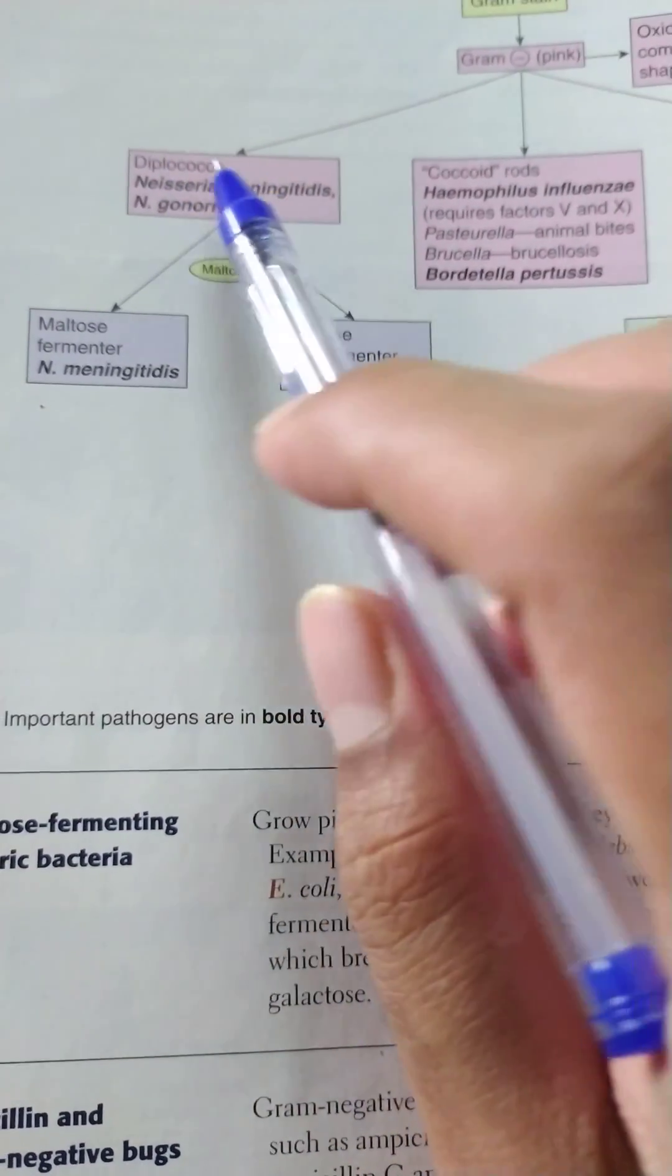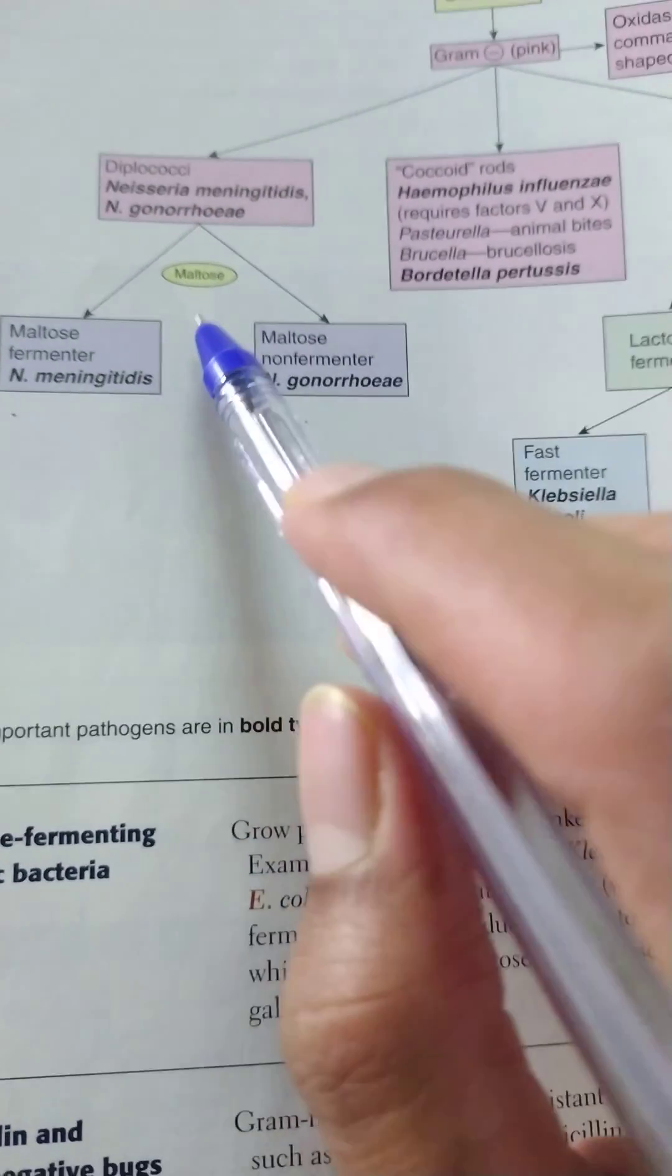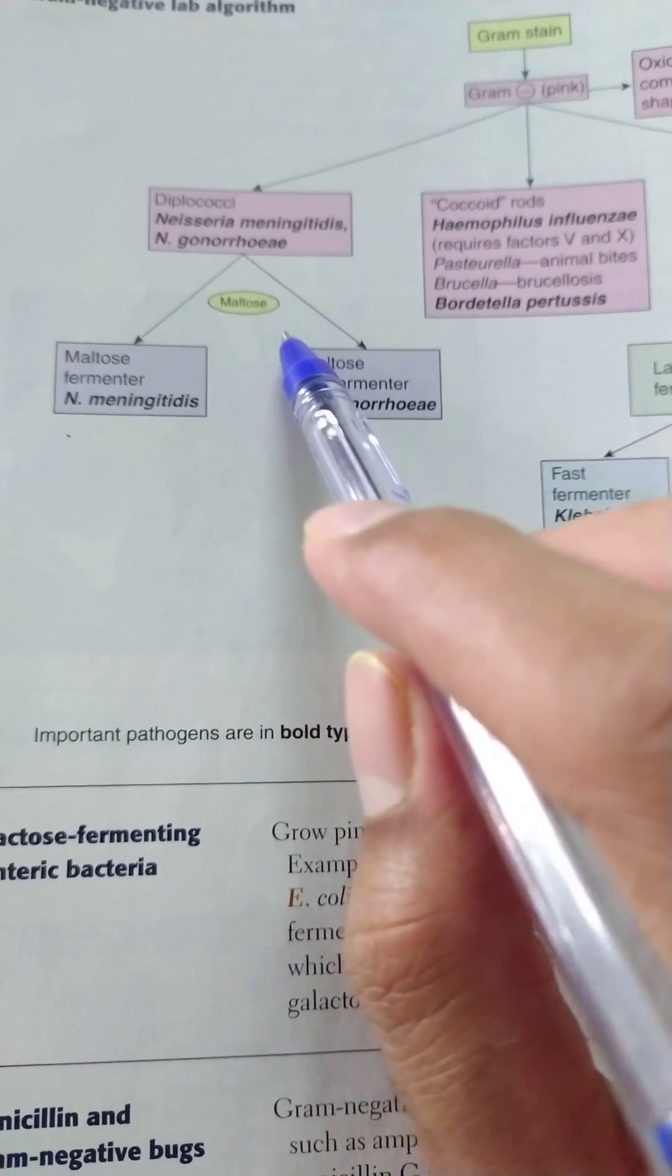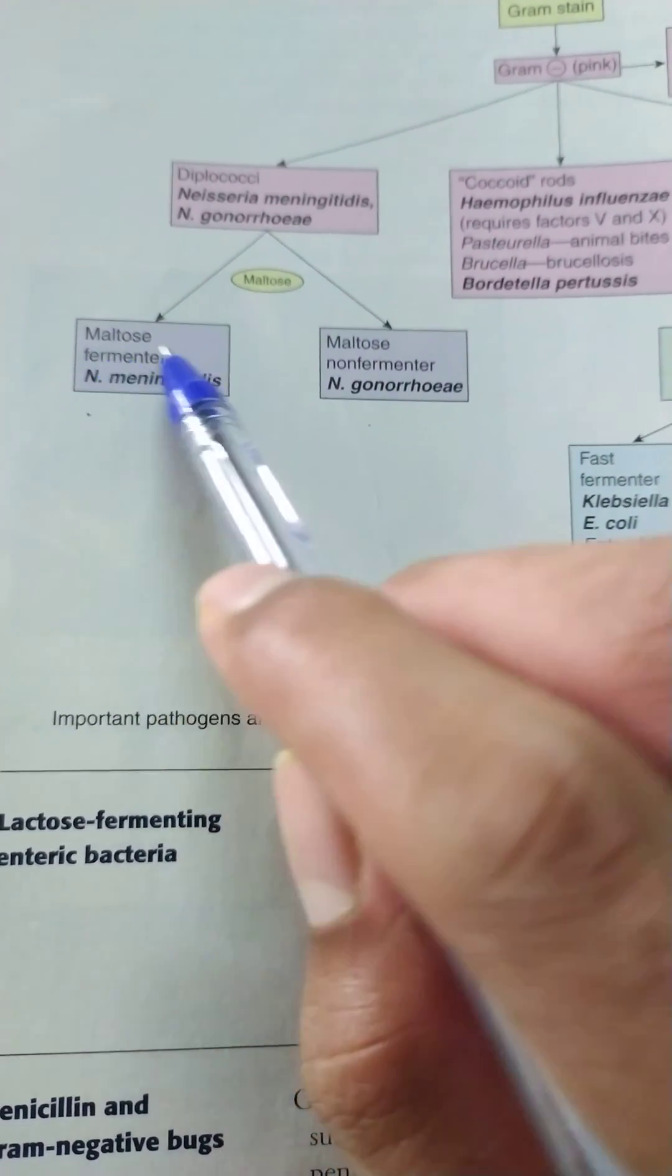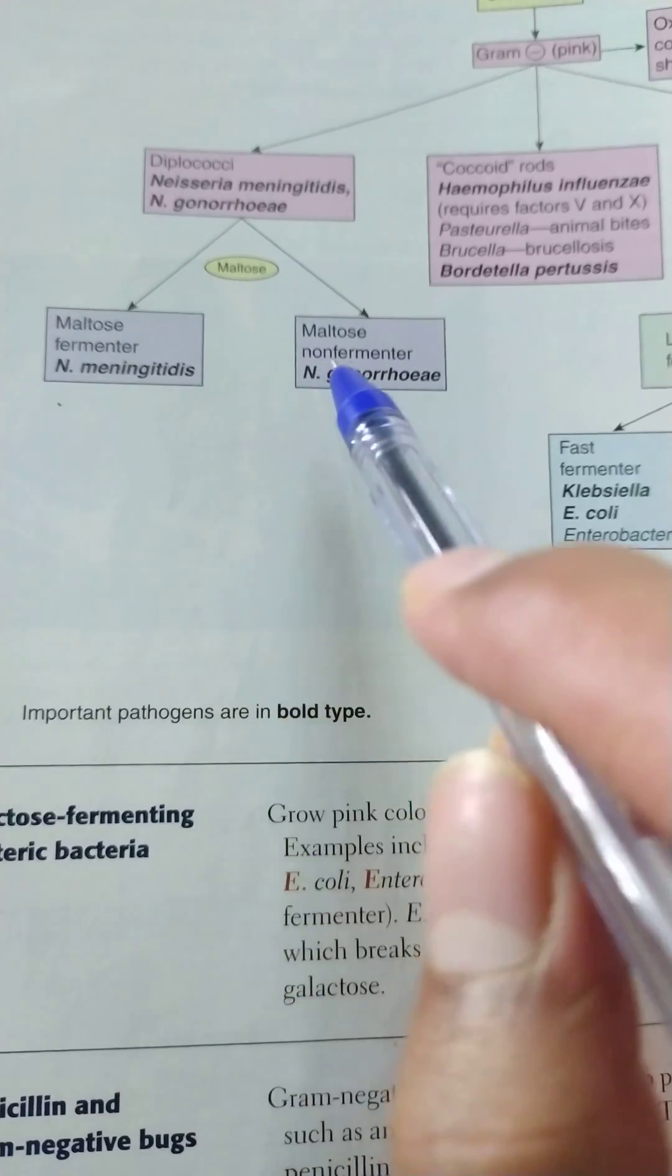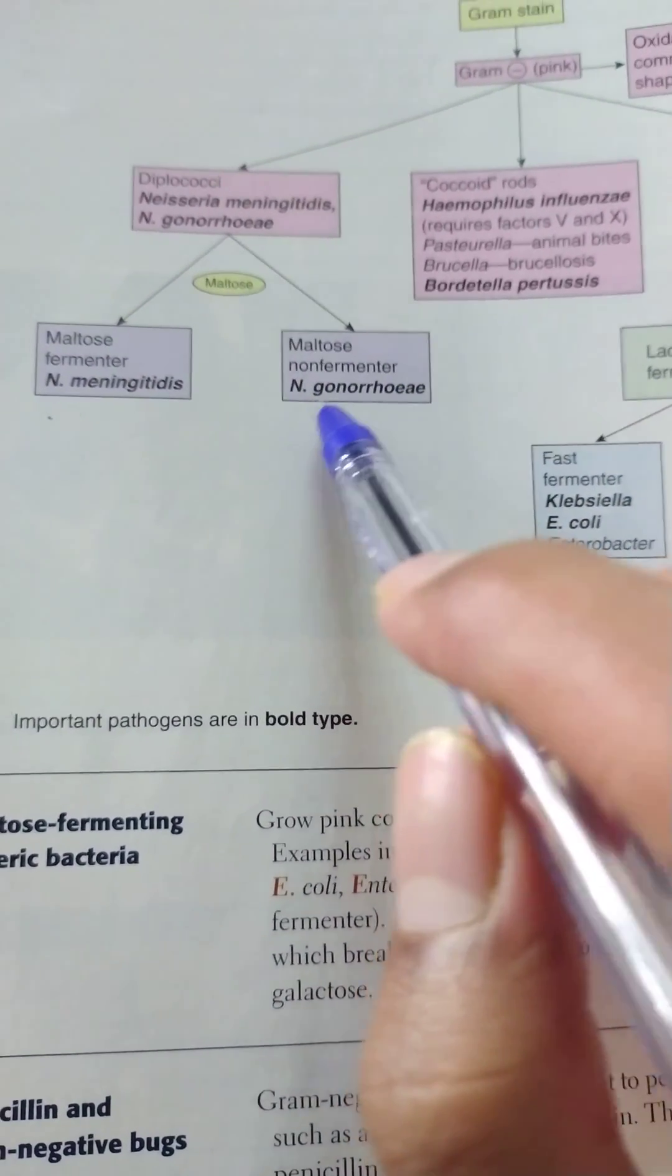So first we will discuss about the cocci, that is the diplococci. It includes mainly the Neisseria organism. To differentiate, we do maltose test. The one which ferments maltose is Neisseria meningitidis, and the non-maltose fermenter is Neisseria gonorrhoeae.